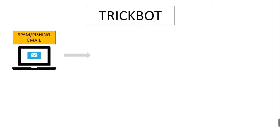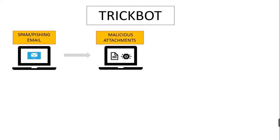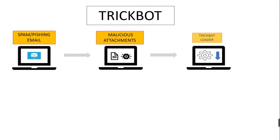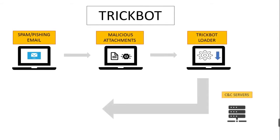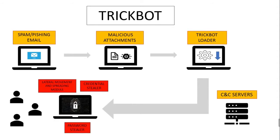TrickBot is an advanced Trojan that malicious actors spread primarily by spear phishing. These campaigns use tailored emails that contain malicious attachments or links, which, if enabled, execute malware. We are informed of recent attacks that use phishing emails to steal sensitive information. The phishing emails contain links that redirect to a website hosted on a compromised server that prompts the victim to click on photo proof of their traffic violation.